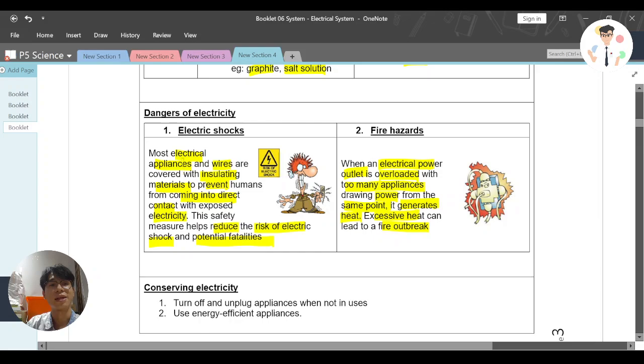And of course, after understanding about the dangers of electricity, we also need to learn how to conserve electricity. So what we can do is we can turn off and unplug appliances when we are not in use. And we can use energy efficient appliance here. Some of the light bulbs is energy saving light bulbs.